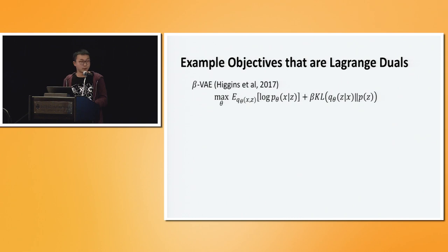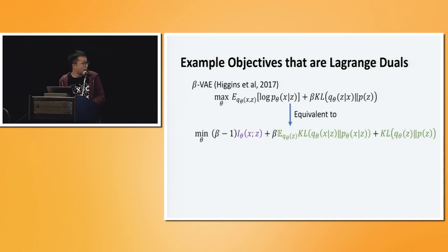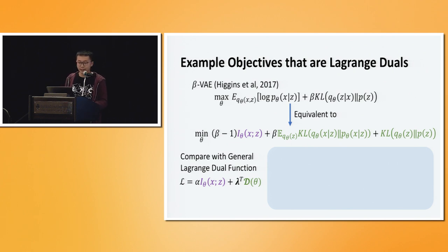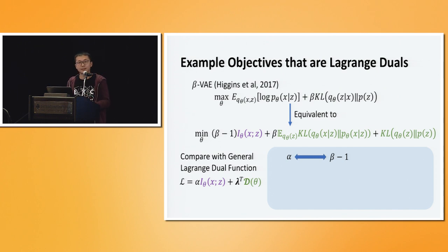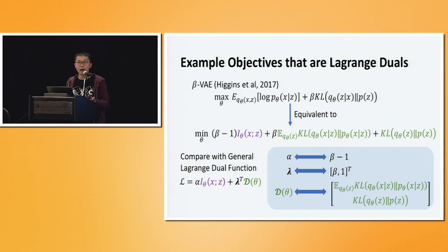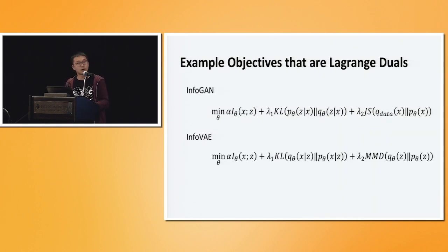For example, this is beta-VAE. It is equivalent to our general form, where alpha equals beta minus 1. So if beta is greater than 1, we are minimizing mutual information, and if less than 1, we are maximizing it. A particular case is when beta equals 1, which becomes the original VAE — meaning the original VAE has no information preference, which explains previous observations that it's ambiguous. We also write out the corresponding lambdas and divergences for several other existing models, all in Lagrangian form. There are many more examples with derivations in the paper.